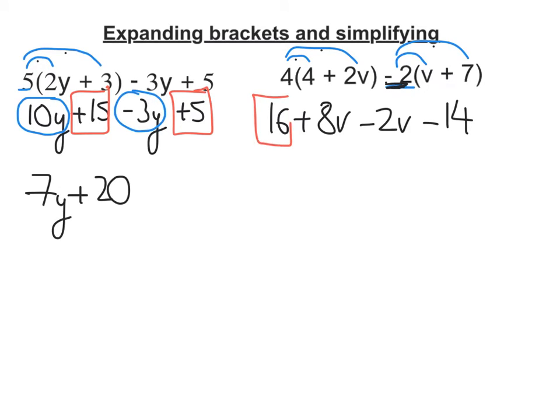Again, like terms. I've got my 16 minus 14, and I've got a plus 8v and a minus 2v. So 16 minus 14 is 2. 8v take away 2v is 6v. There's my answer: 2 plus 6v, or 6v plus 2.